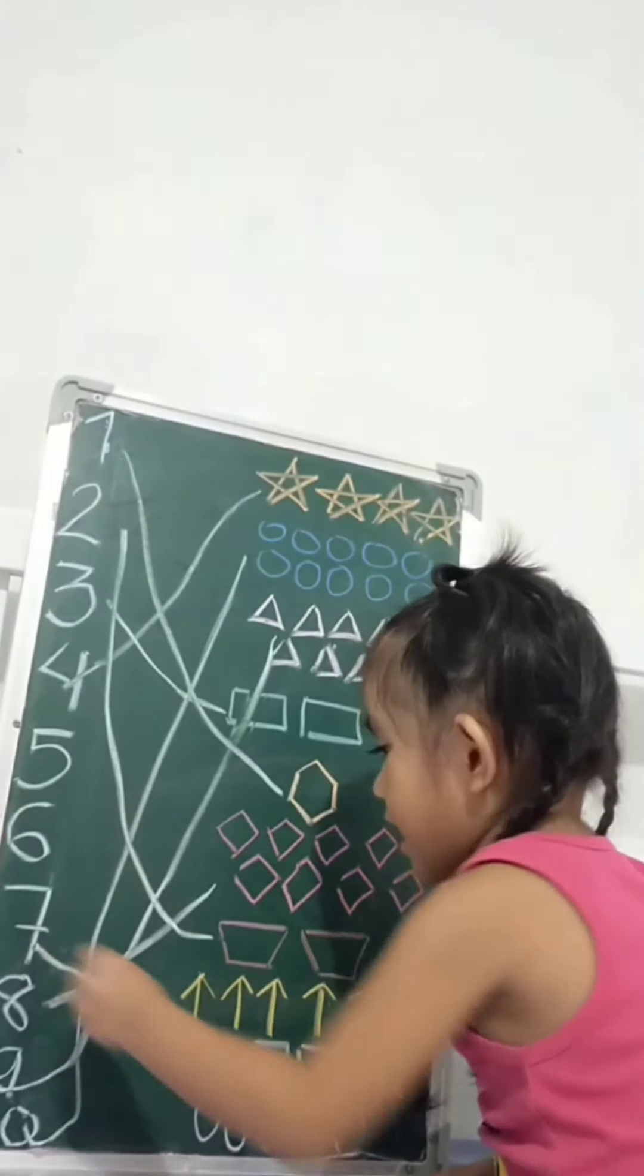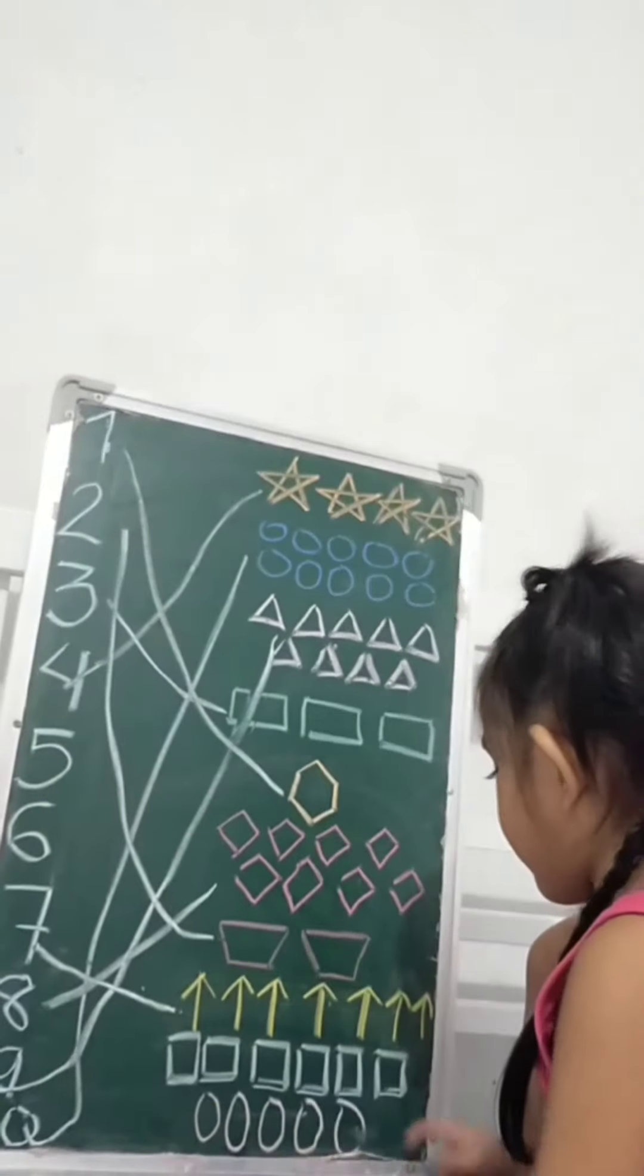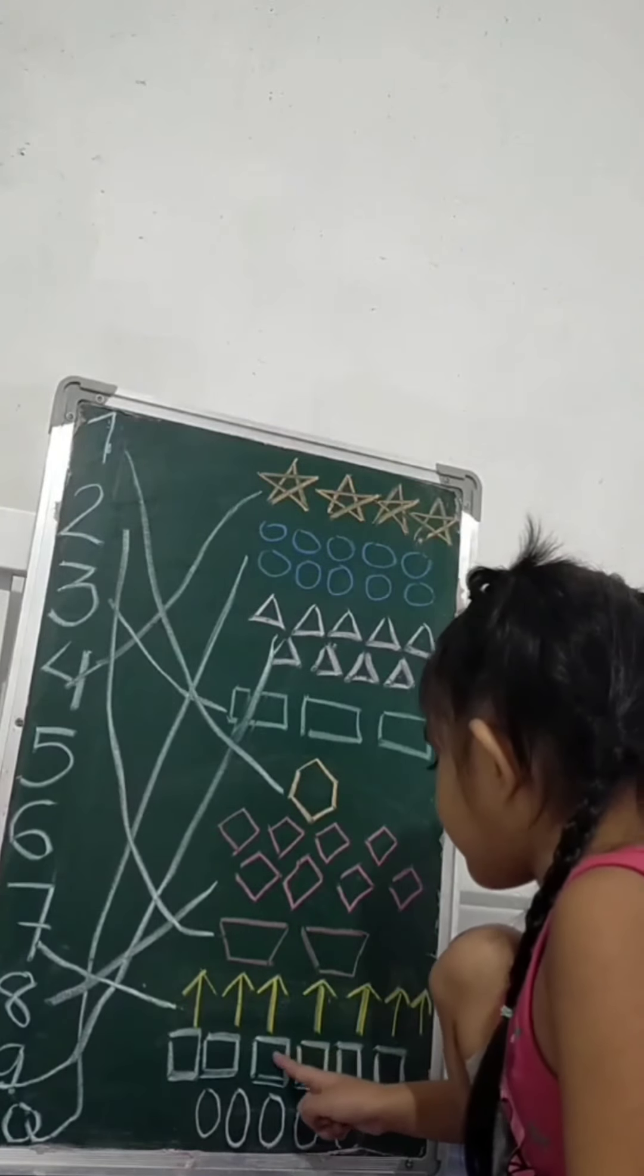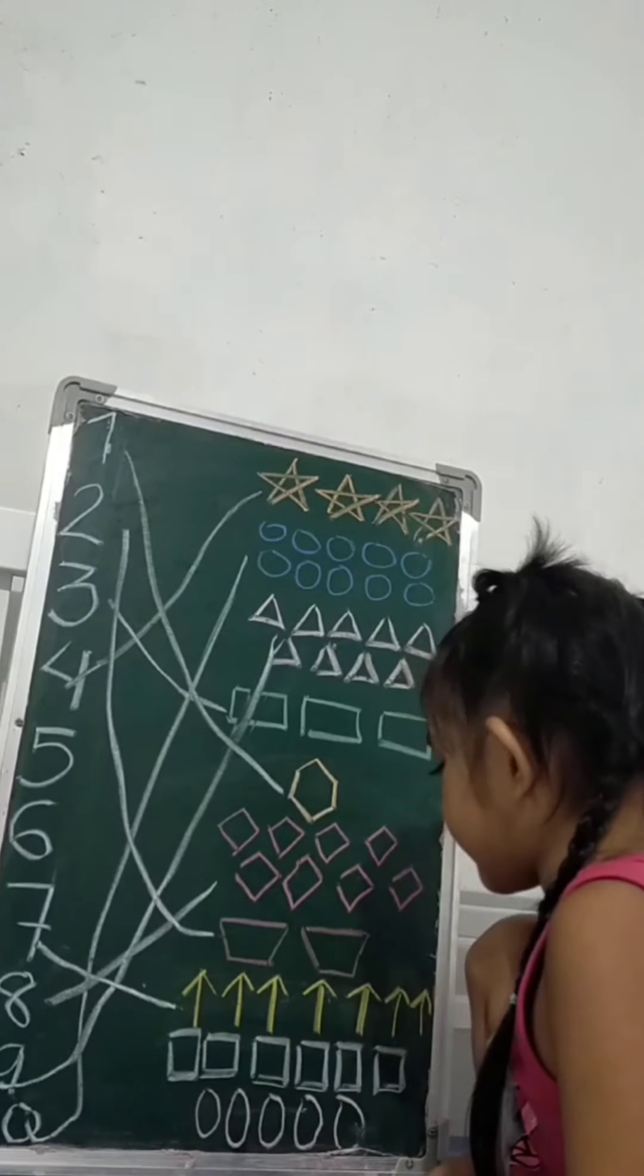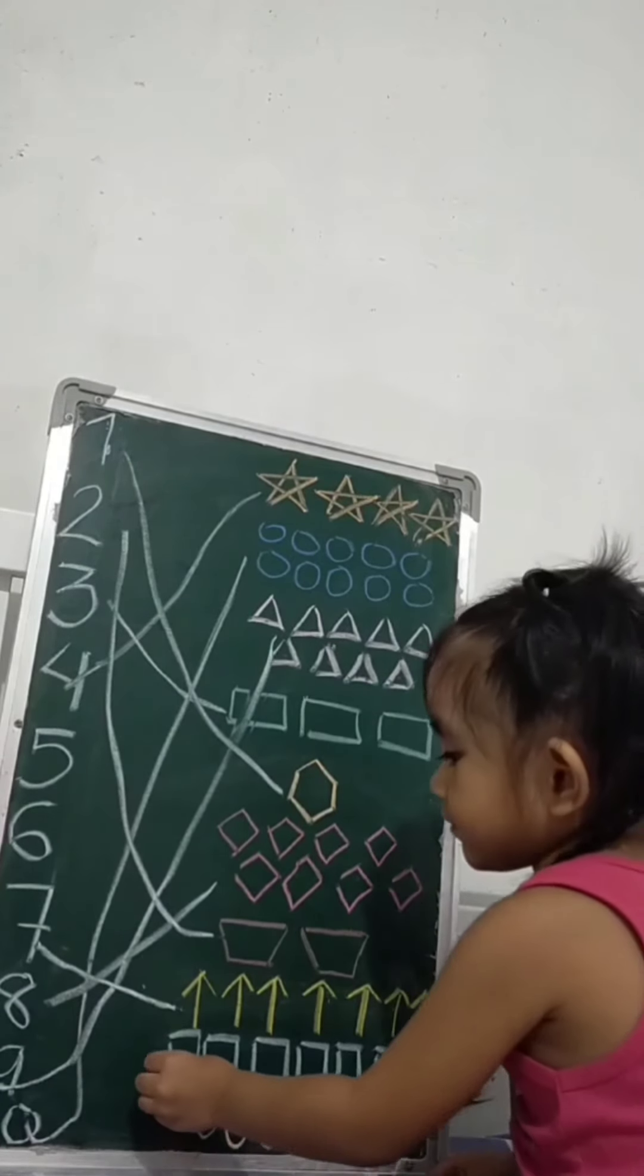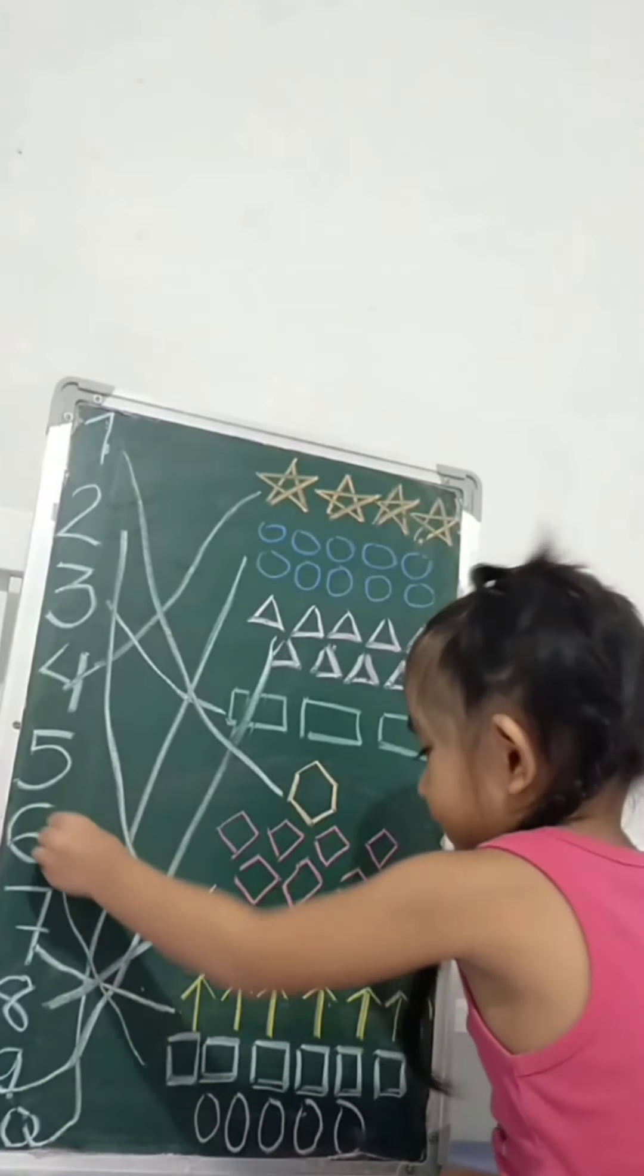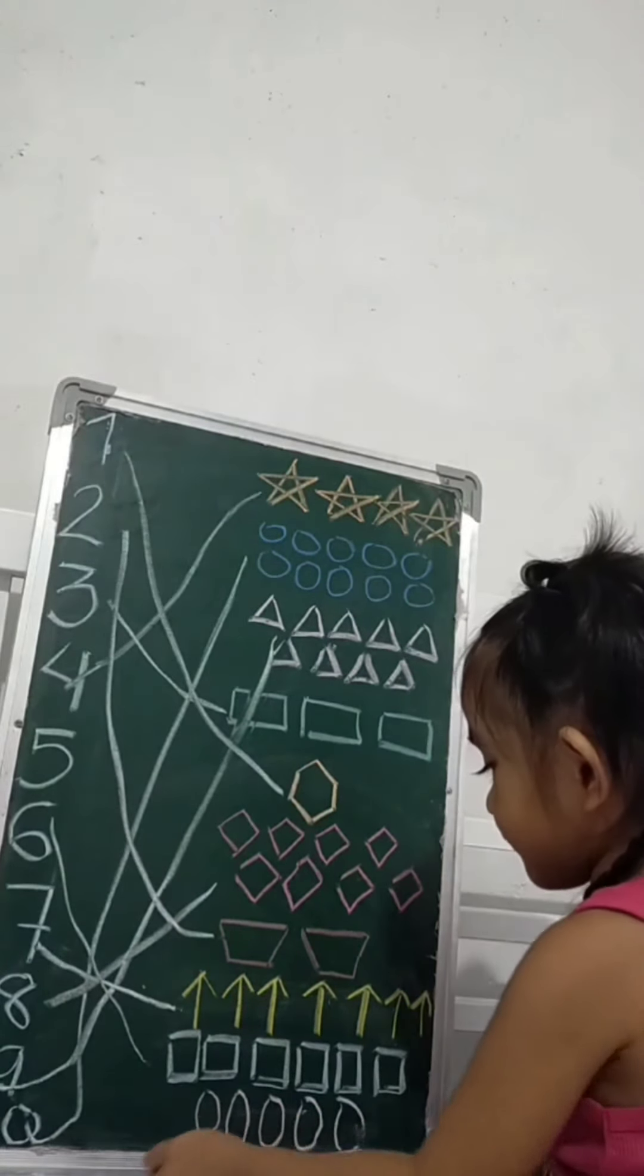Very good. How many squares? One, two, three, four, one. Where's number six? Very good. Next.